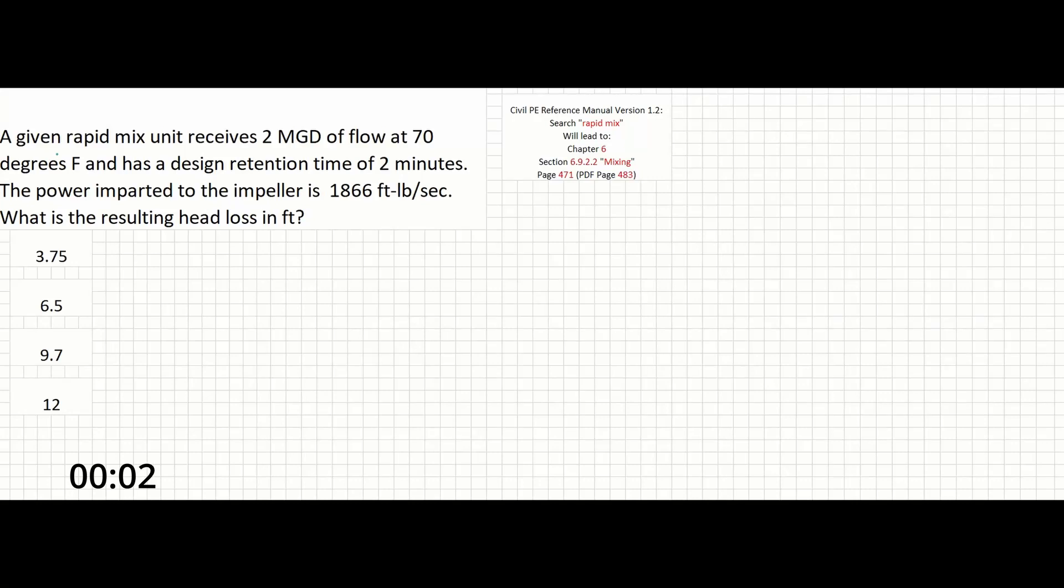A given rapid mix unit receives 2 MGD of flow at 70 degrees Fahrenheit and has a design retention time of two minutes. The power imparted to the impeller is 1866 feet-pound per second. What is the resulting head loss in feet?